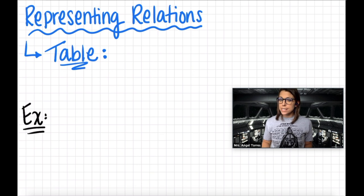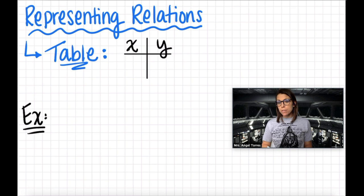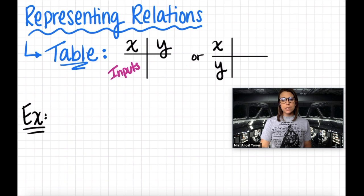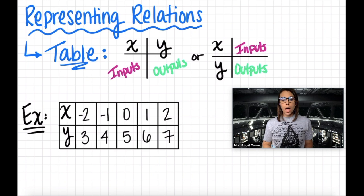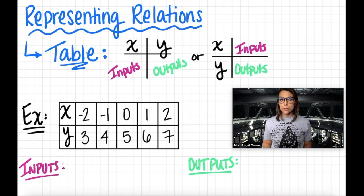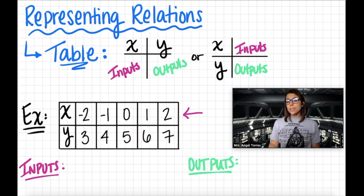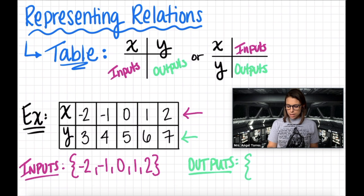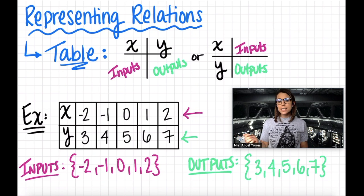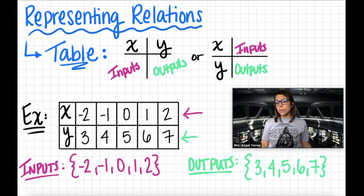Another way to represent relations is with a table. The most common tables you're going to see are vertical tables; however, you may also see horizontal tables. The X's are your inputs and the Y's are your outputs. Here I have a horizontal table with input X on the top and output Y on the bottom. My inputs are all the values of X listed from least to greatest with no repeats: negative 2, negative 1, 0, 1, and 2. The outputs are listed in order from least to greatest with no repeats as well. When listing inputs and outputs, we're not specifically showing which two are related — we're just identifying what they were for this particular relation.